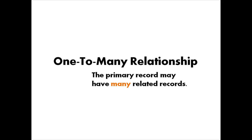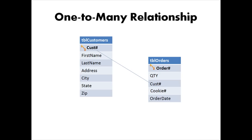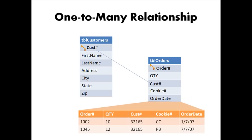The one-to-many relationship is a relationship where the primary record may have many related records. In this example, each customer number is only allowed to appear once in the customer table, because we don't want to assign two different customers the same number. However, in the orders table, the customer number is allowed to repeat, because here we want customers to be able to place more than one order — we want that repeat business, hence the name one-to-many. Here's what that information would look like in a table: we have two different orders from the same customer. This is incidentally the most common kind of relationship to have in Access.